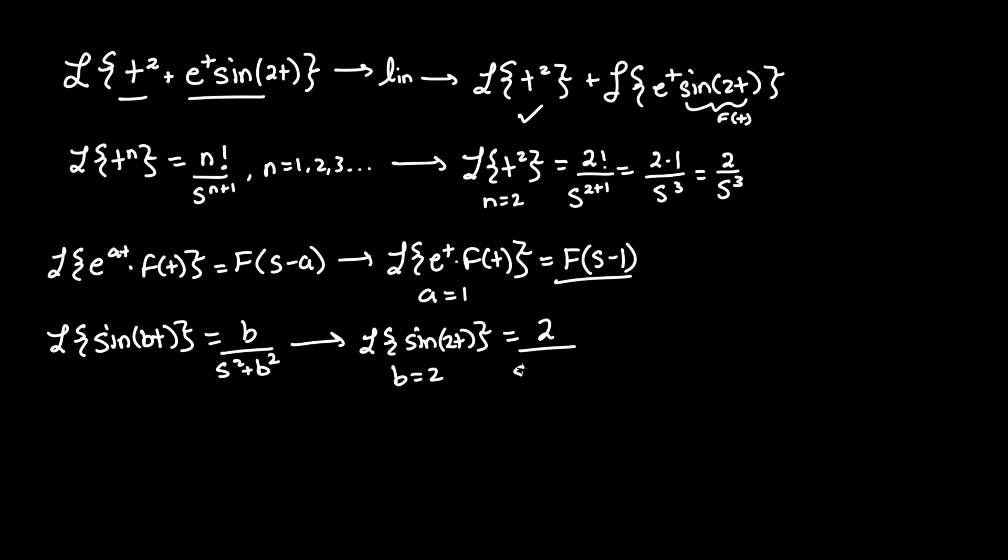Plugging in b, that becomes 2 over s squared plus 2 squared. Or in other words, 2 over s squared plus 4. So this is our F of s term.